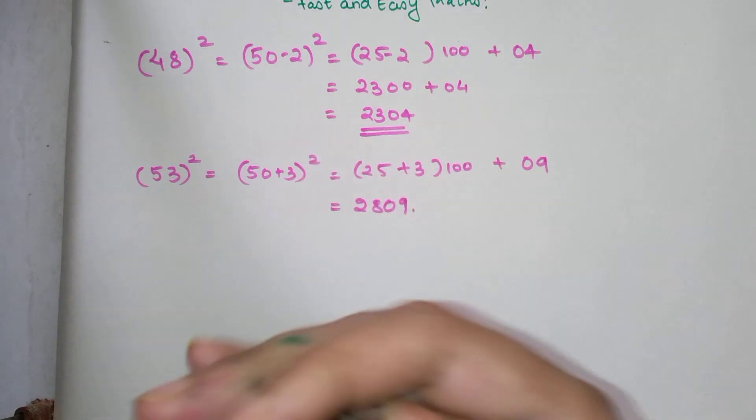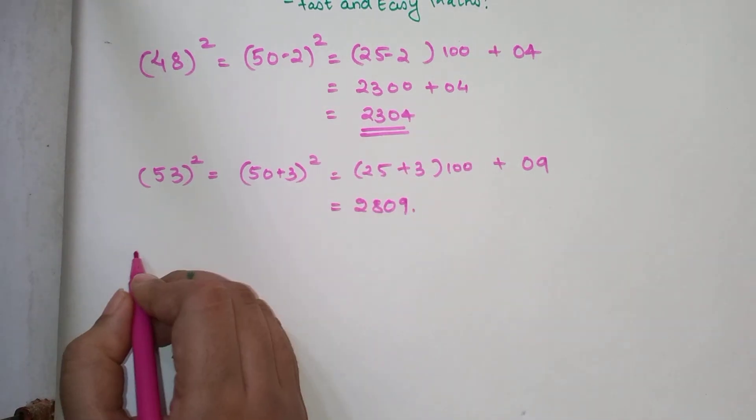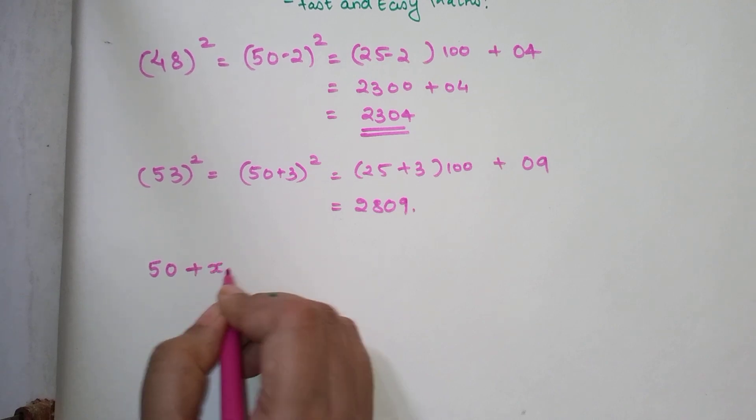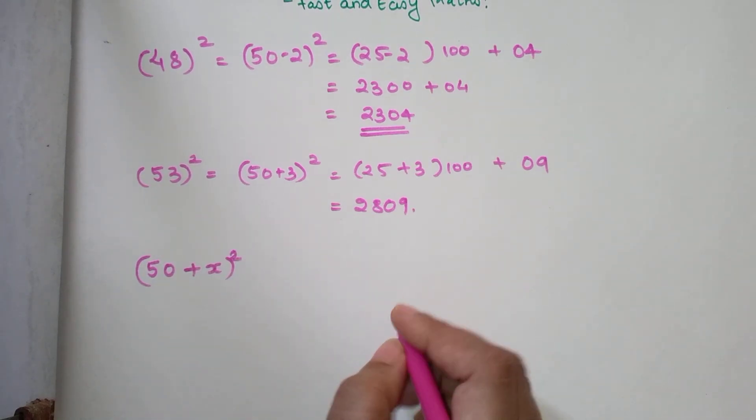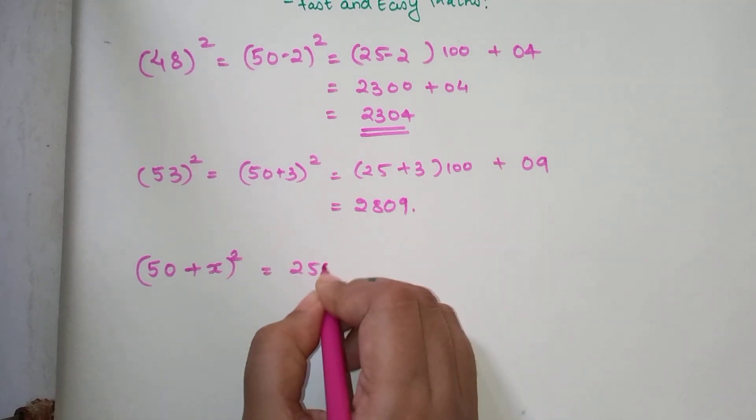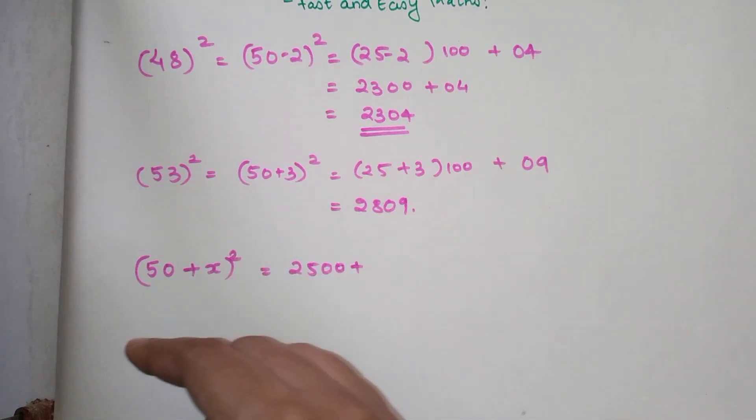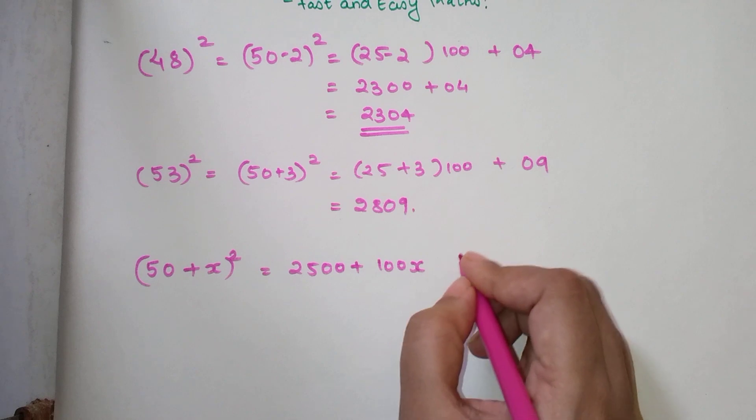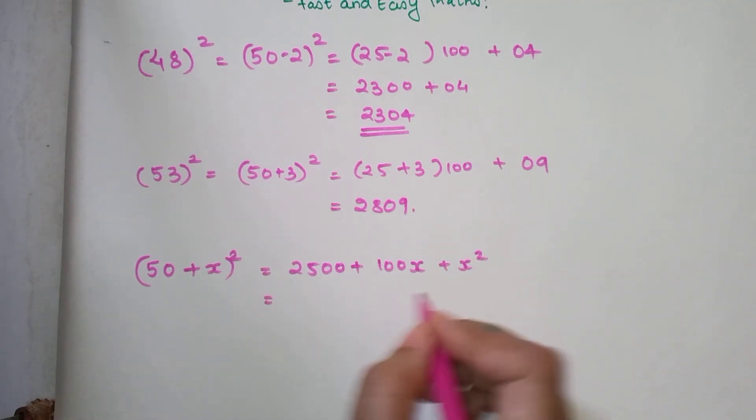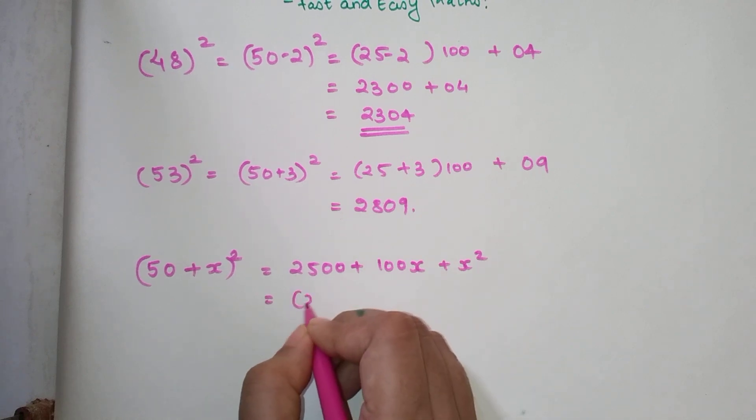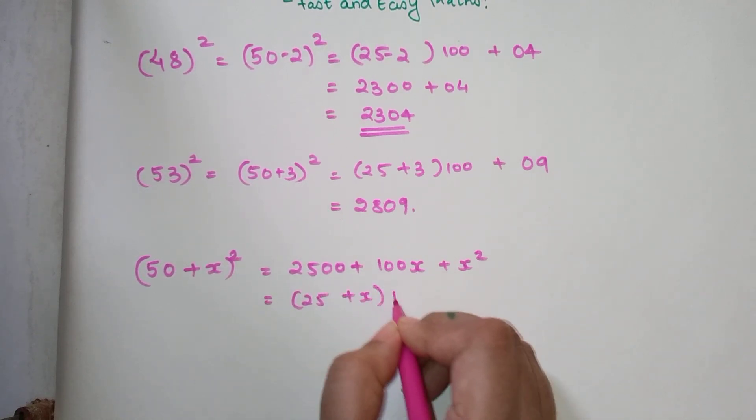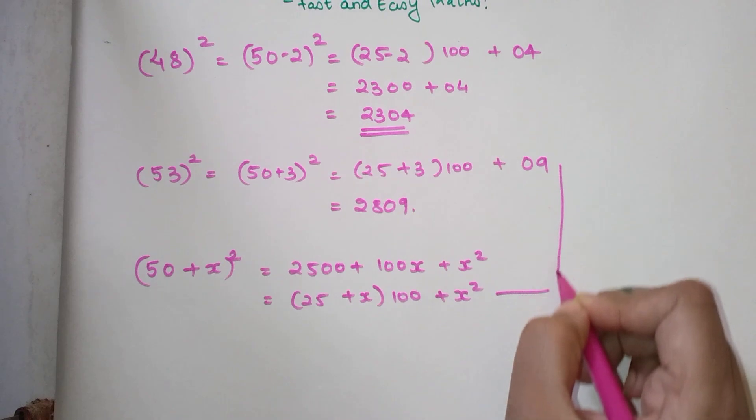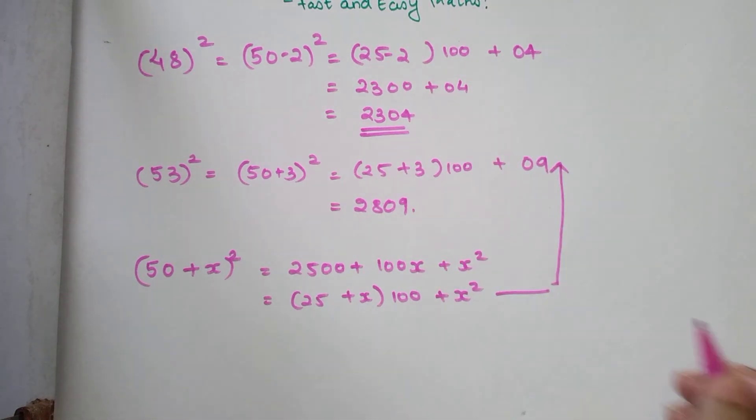Now, coming to the explanation, why this trick is working. Since my common number taken over here is 50, I am going to do 50 plus x, the whole square. If we have to do that, let's open this. We have 2500 plus 2 into 50 into x. That is 2 into 50 is 100 into x is 100x plus x square. Now, can I take anything common from these two numbers? Yes, I can take 100 common plus x square. Now, if you see, this is exactly what I did for all of these sums.